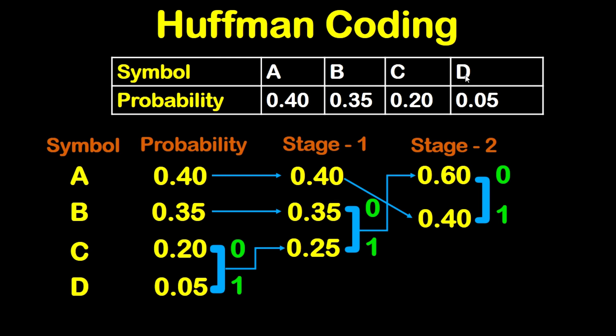Now what we are going to do is put symbols based on probability in descending order. We will start by the biggest number which is 0.4 till the last number which is 0.05.